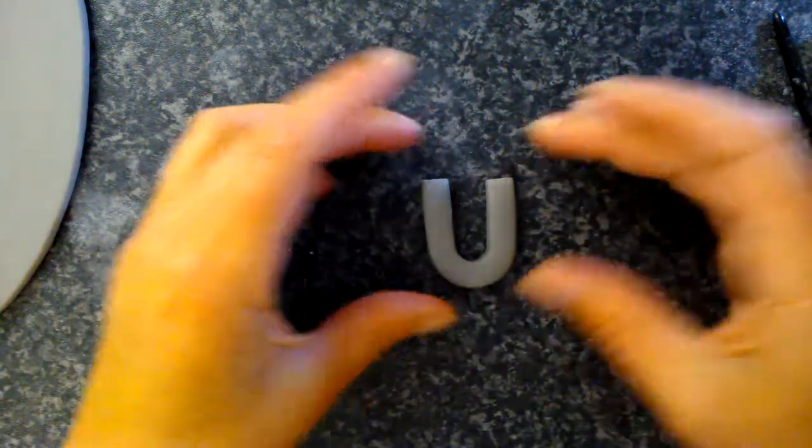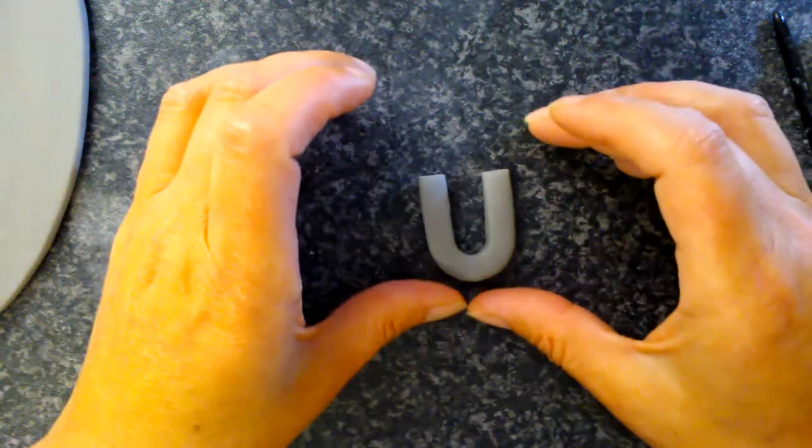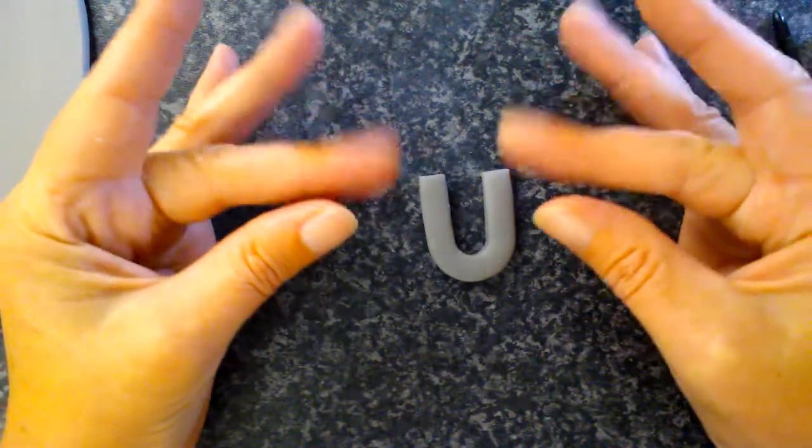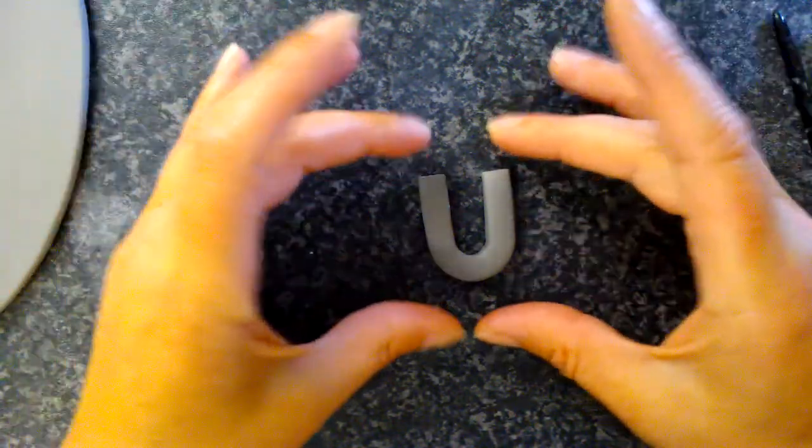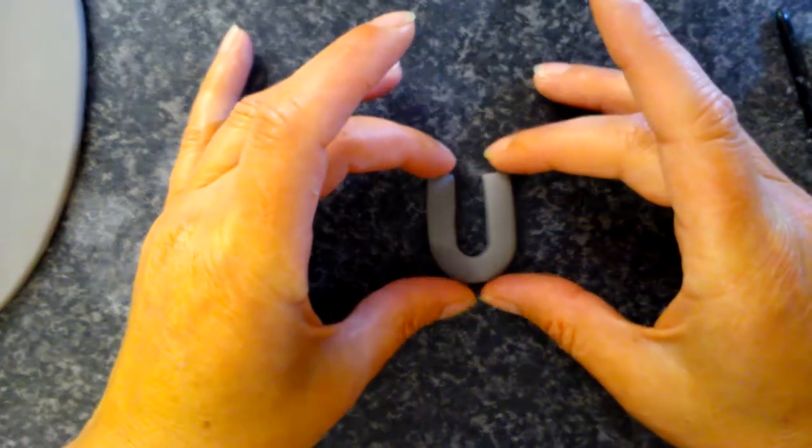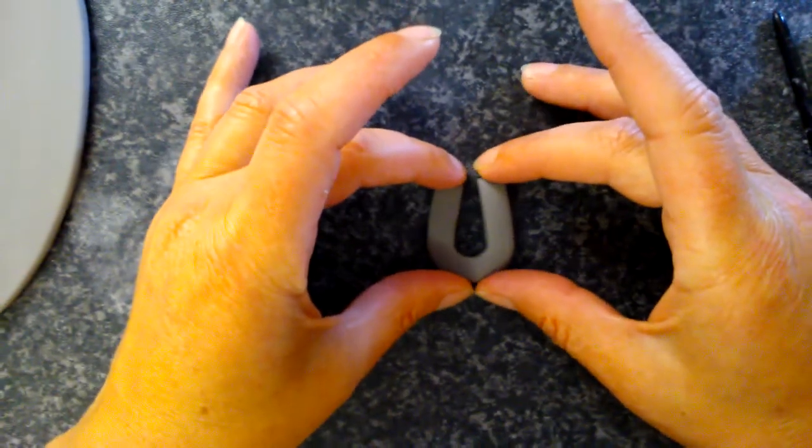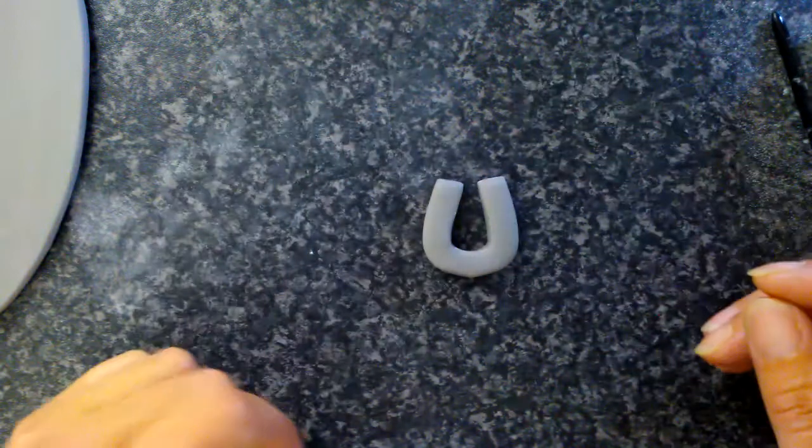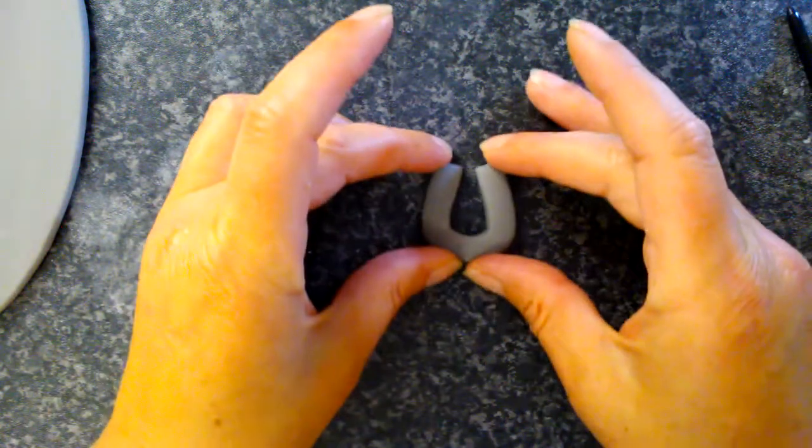And then to turn it into the horseshoe we're going to put thumbs at the bottom and I'm using my middle fingers to be tall and I'm going to push together like that. So I'm going to just tuck it in a little bit and push. And there it's got the horseshoe shape.